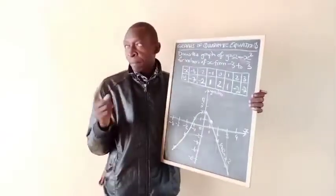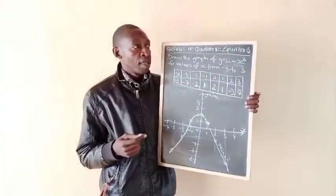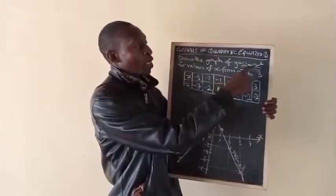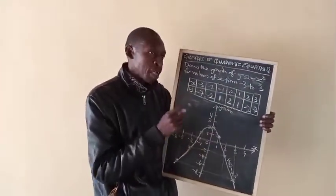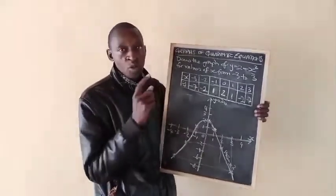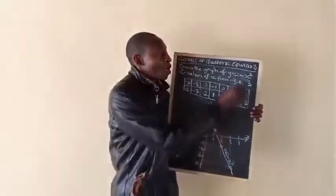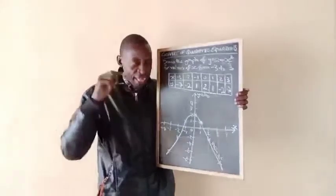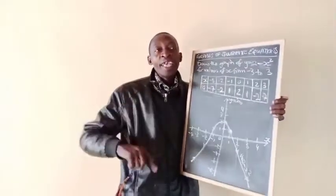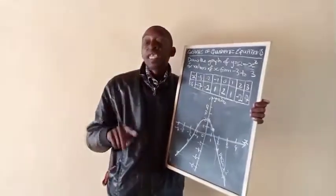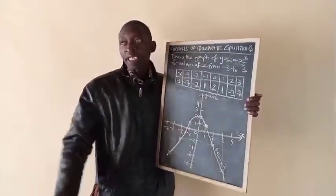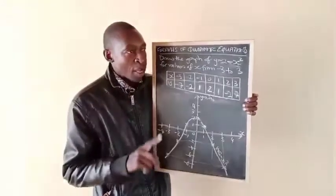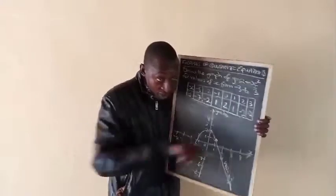So let's wrap up. Graphs for quadratic equations form either caps or cups. To be a quadratic equation, you must have x raised to the power 2, and x to the power 2 must be the highest power. If you have x to the power 3 and x to the power 2 in the same equation, it's not quadratic. It's only quadratic when the highest power of x is 2 in the equation.